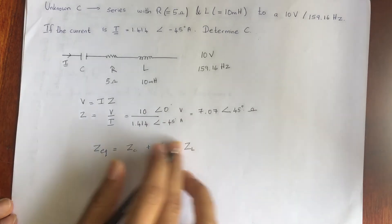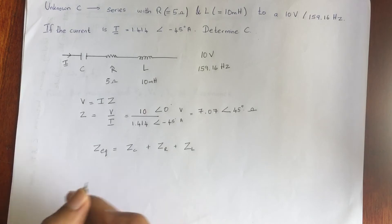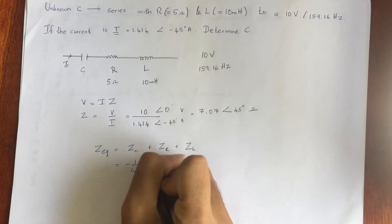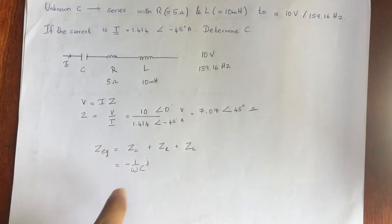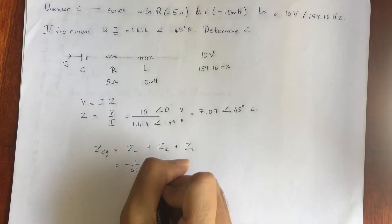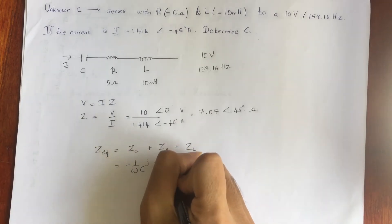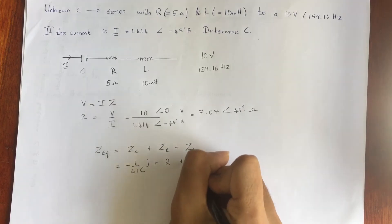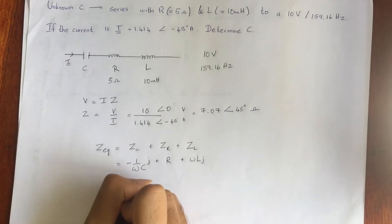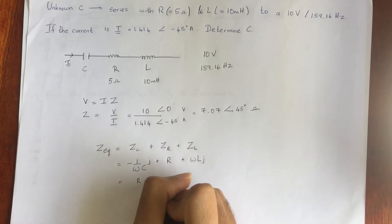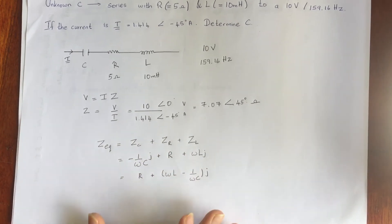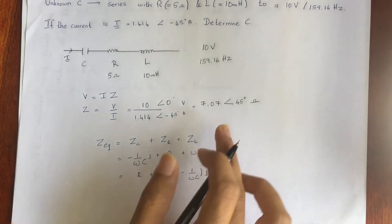We know the value of Z_eq. Z_C equals minus 1 / (omega × C × j) — the reactance part is a complex number. Z_R is the real part, which is 5 ohms. Z_L equals omega × L, which is the imaginary part. Combining, the total impedance is: Z_eq = R + j(omega·L − 1/(omega·C)), where the imaginary part coefficient is (omega·L − 1/(omega·C)).